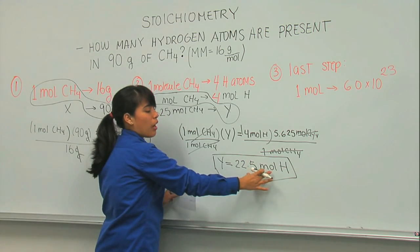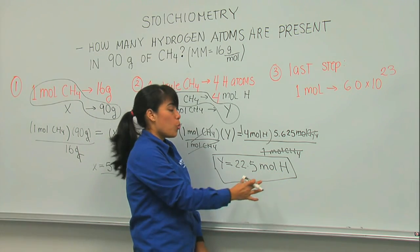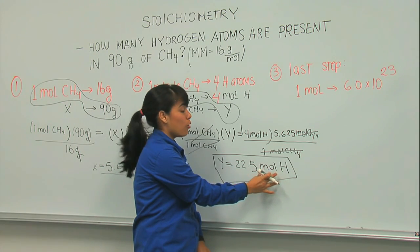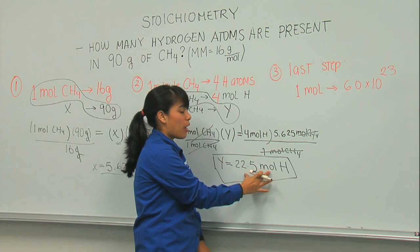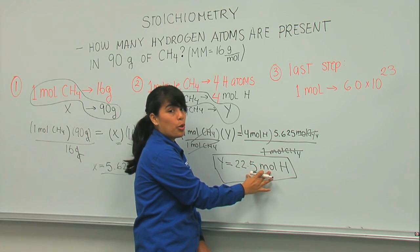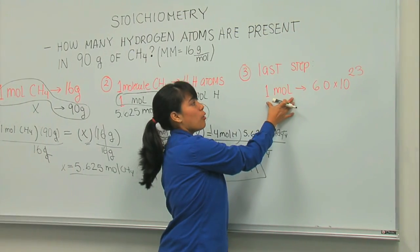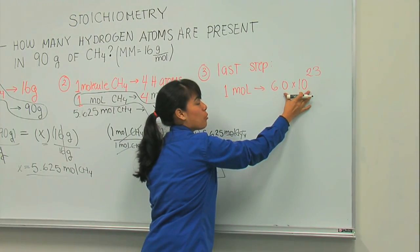Because now we have moles of hydrogen. And there is one last step. And if you remember, one mole is the same as Avogadro's number. So if I want the number of atoms present, I will have to do a last step in which I convert moles to a number. So in the last step, I know that one mole is 6.02 times 10 to the 23.